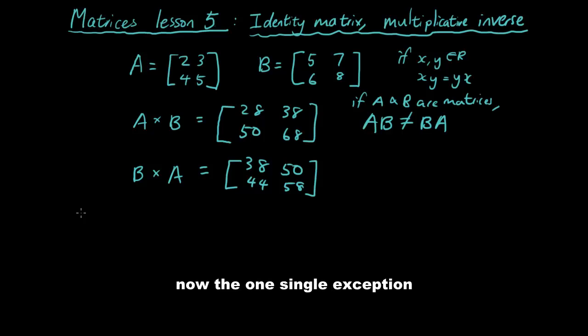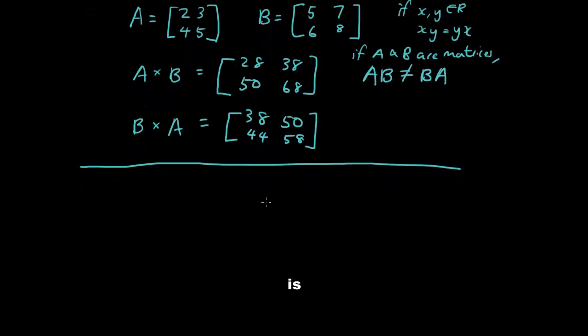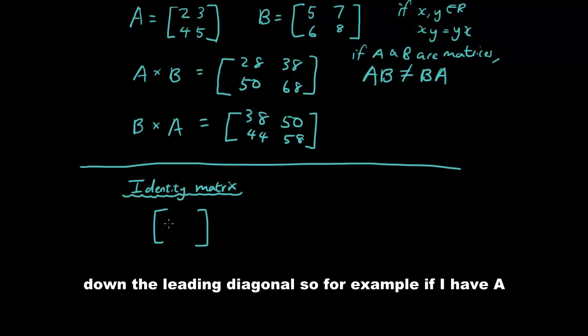Now, one single exception is the identity matrix. And the identity matrix is simply a matrix with the number 1 down the leading diagonal.